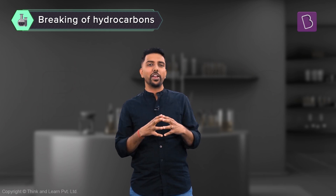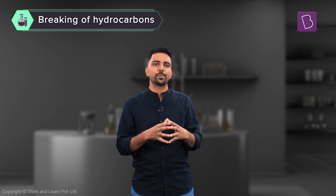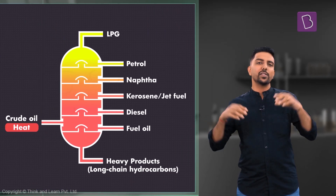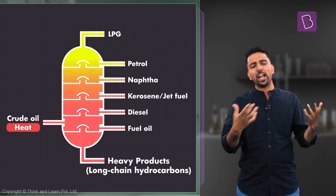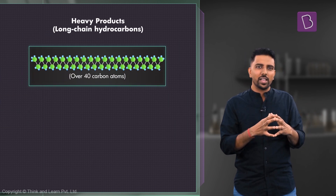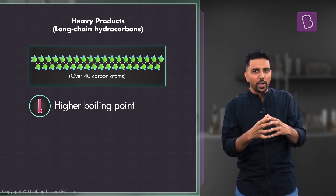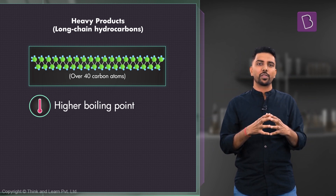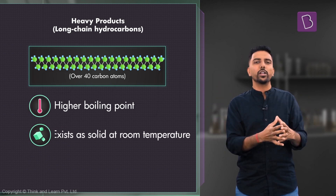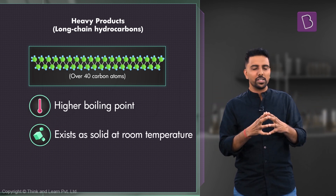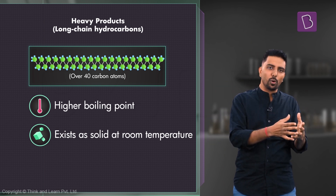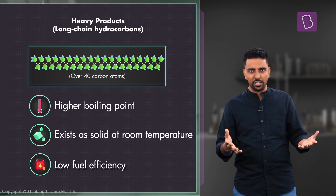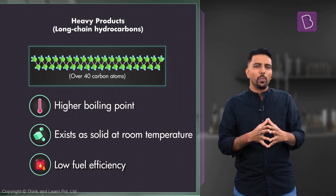Like most chemical processes, petroleum refining also has its fair share of waste products — in this case, in the form of long-chain hydrocarbons which don't have very high demand. These long-chain hydrocarbons have a higher boiling point, meaning they require higher temperatures to ignite. It's also likely that these high molecular long-chain hydrocarbons exist as solids at room temperature, so they don't perform nearly as well as petrol or diesel in terms of fuel efficiency.